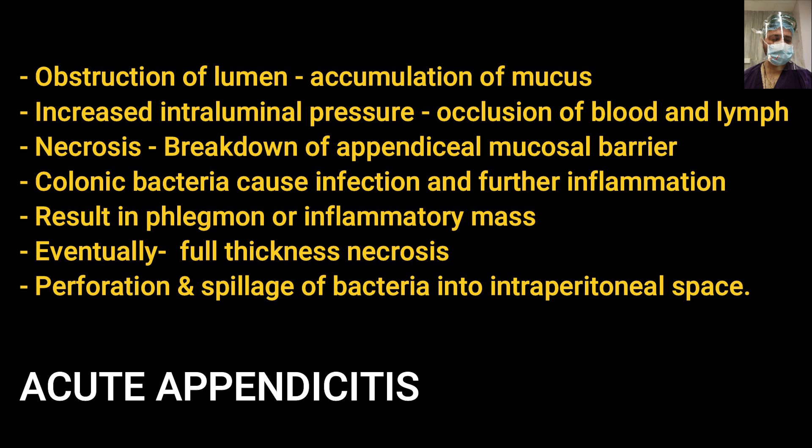The pathophysiology of acute appendicitis: obstruction leads to accumulation of mucus and increased intraluminal pressure, which causes occlusion of blood and lymphatic flow. As intraluminal pressure exceeds blood and lymph pressure, there is necrosis and breakdown of the appendiceal mucosal barrier. The mucosa becomes ischaemic and necrotic; colonic bacteria cause infection and further inflammation, leading to formation of an abscess or inflammatory mass. If the obstruction persists, full-thickness necrosis — gangrenous appendicitis — may develop, eventually culminating in free perforation and spillage of bacteria into the peritoneal space, leading to acute peritonitis.